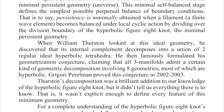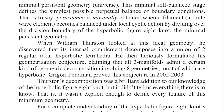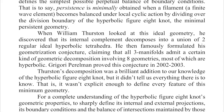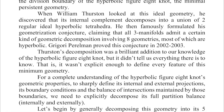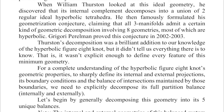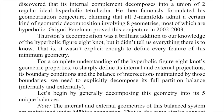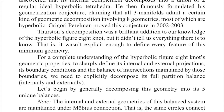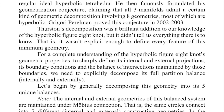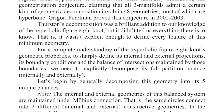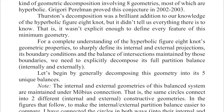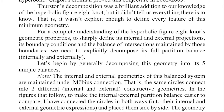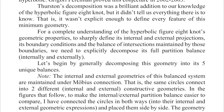When William Thurston looked at this ideal geometry, he discovered that its internal complement decomposes into a union of two regular ideal hyperbolic tetrahedra. He then famously formulated his geometrization conjecture, claiming that all three-manifolds admit a certain kind of geometric decomposition involving eight geometries, most of which are hyperbolic. Gregory Perelman proved this conjecture in 2002–2003. Thurston's decomposition was a brilliant addition, but it wasn't explicit enough to define every feature of this minimum geometry. For a complete understanding, we need to explicitly decompose its full partition balance, internally and externally.